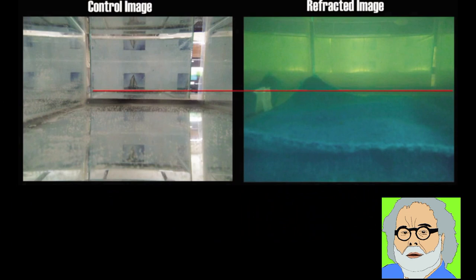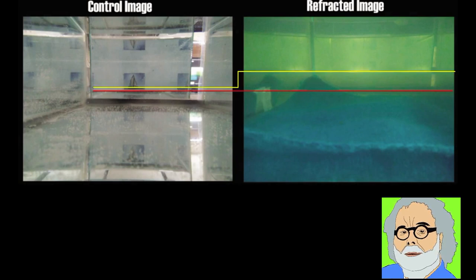He keeps his red line at the bottom of the tank in the refracted image, but not at the respective horizons. That line should be shifted upward considerably.